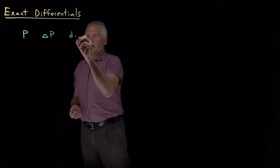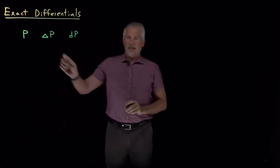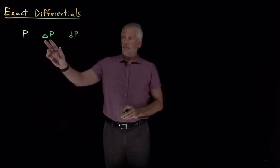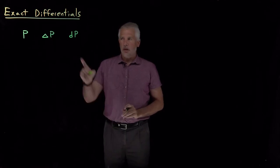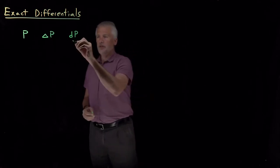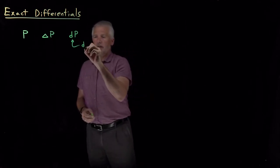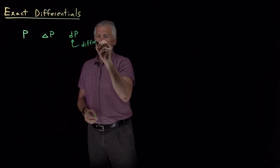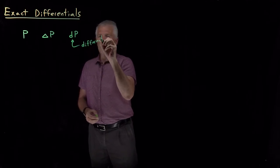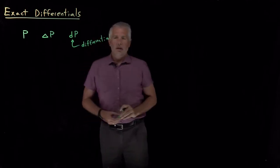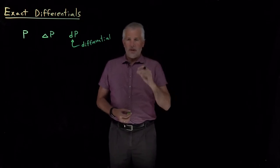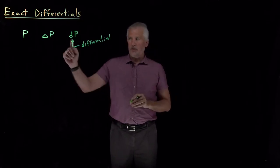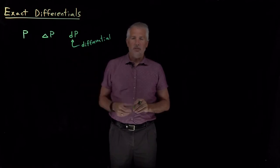Sometimes what we're interested in is not the finite change in the property but the infinitesimally small change — the differential change. This quantity dp we call a differential, not a derivative. It's only half of the derivative: not dy/dx, but just either the numerator or denominator — an infinitesimally small change in the pressure.